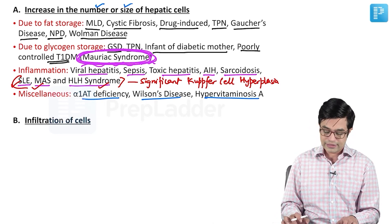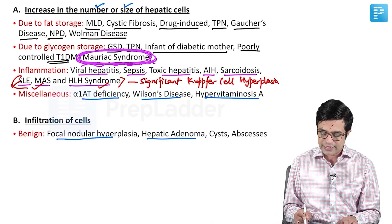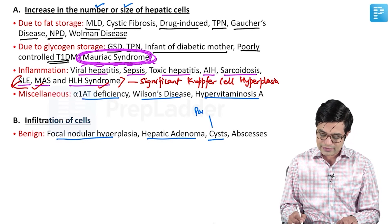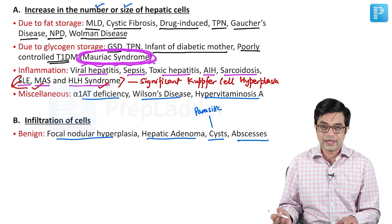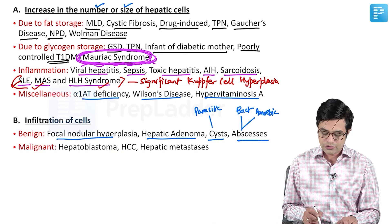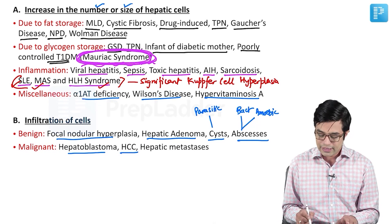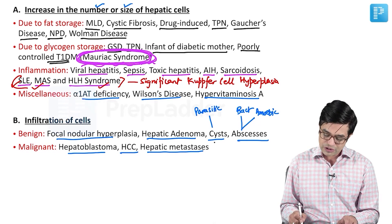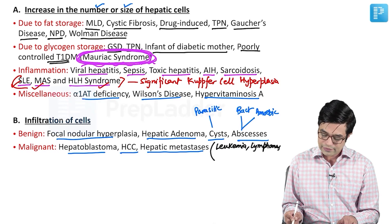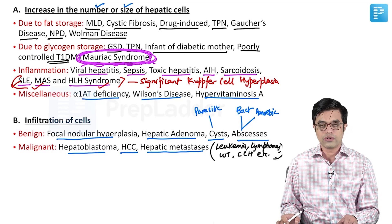The second category is infiltration of cells, usually seen in tumorous conditions. Benign tumors include focal nodular hyperplasia and hepatic adenoma. Cysts — whether parasitic or congenital — and abscesses such as bacterial or amoebic liver abscess can also cause hepatomegaly. Malignant causes include hepatoblastoma, common in young children; hepatocellular carcinoma, more common in adults; and hepatic metastasis, with common pediatric sources being leukemias, lymphomas, Wilms tumor, and Langerhans cell histiocytosis.